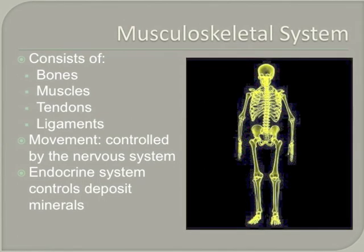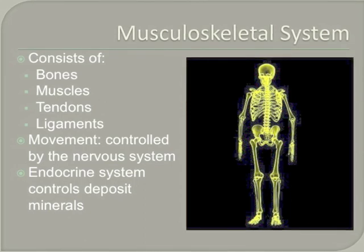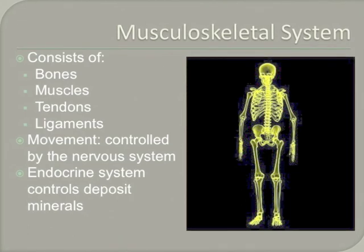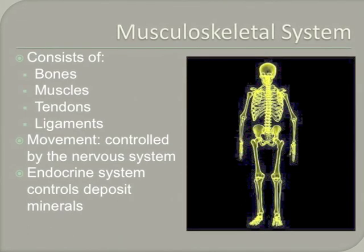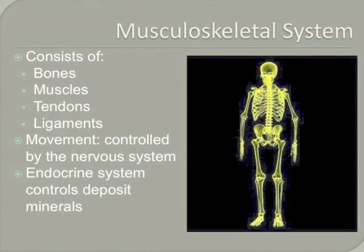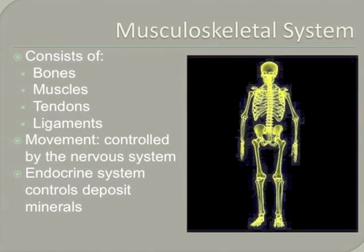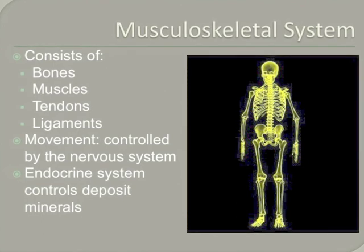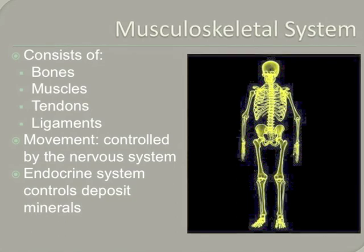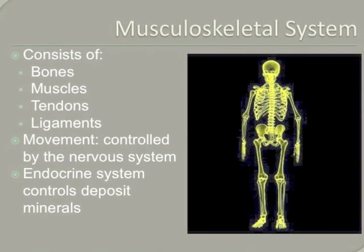Ligaments attach bone to bone. The nervous system provides a signal that makes the muscles contract. The endocrine system controls the deposit of minerals which help muscles move. The thyroid gland makes calcitonin which lets calcium stay in the bone. The parathyroid hormone takes calcium out of the bone to maintain a normal calcium blood level. Besides building bone, calcium also plays a major role in muscle contraction and nerve conduction. Magnesium and potassium also affect musculoskeletal system functioning.